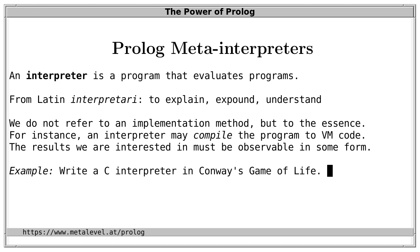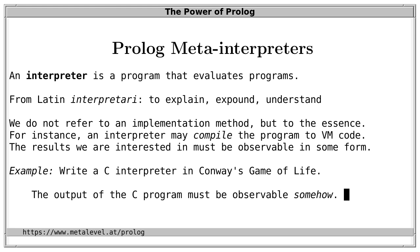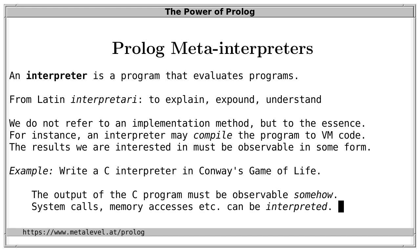We only care that the results we are interested in are observable in some form. For example, let's write an interpreter for C expressed as an initial configuration in Conway's Game of Life, which is Turing complete and can therefore express all computations that C and other programming languages can perform. Many features we expect from a computer are not available in Conway's Game of Life, but we can represent them all somehow.